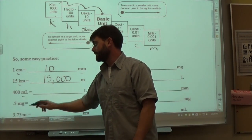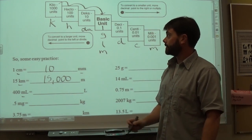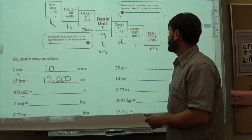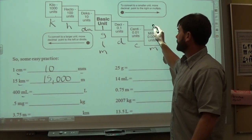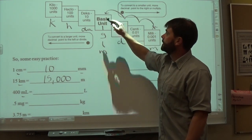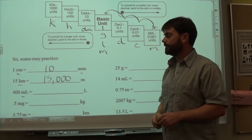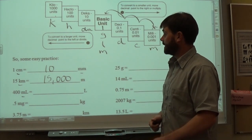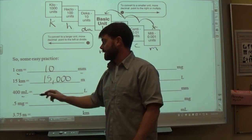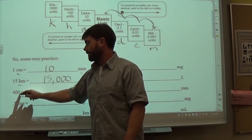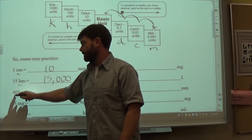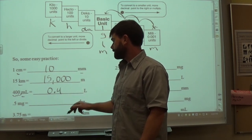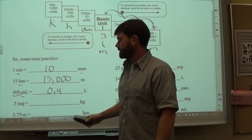Next, converting 400 milliliters to liters. Milli is at the bottom of the staircase and we're going back to the base unit — that's 3 steps to the left. Moving to the left is the same as dividing. The decimal for 400 is at the end; moving it back 3 places puts it in front of the 4. So you get 0.4 liters.